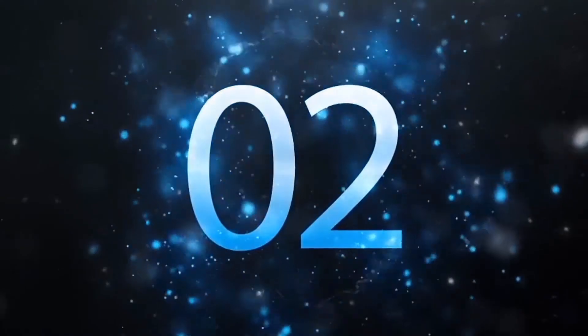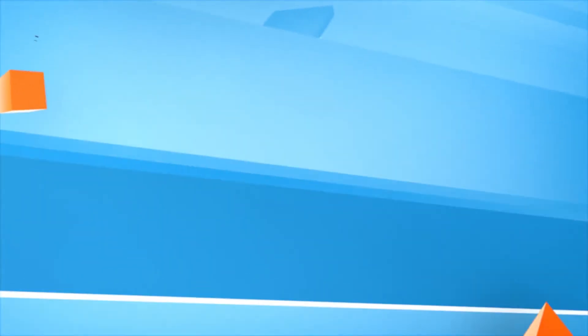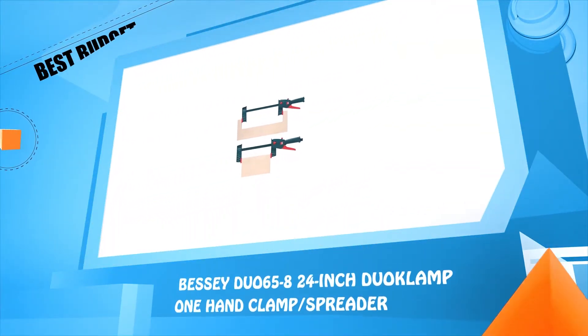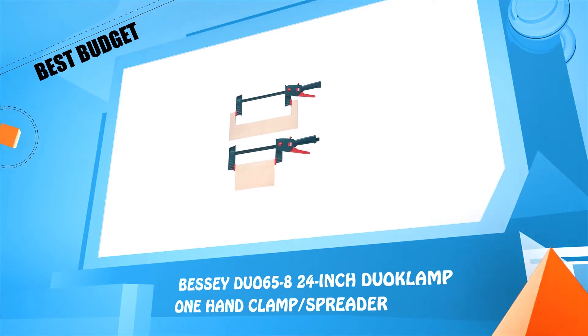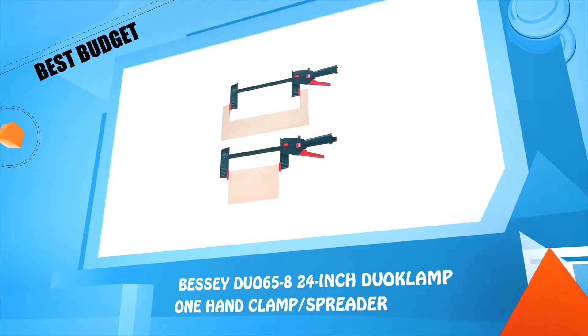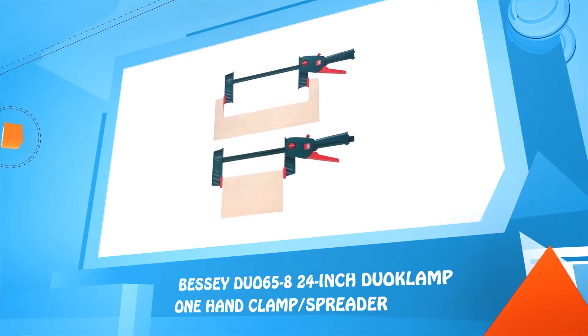Number 2. Bessie TU-06 5/8, 24 inches bar clamp, one hand clamp, or spreader.